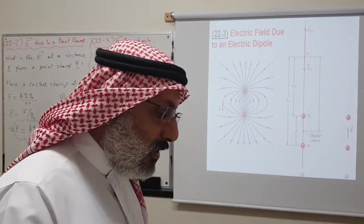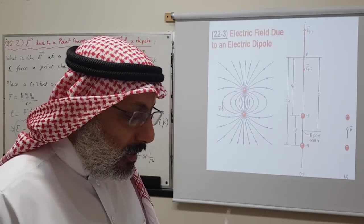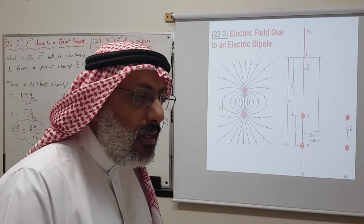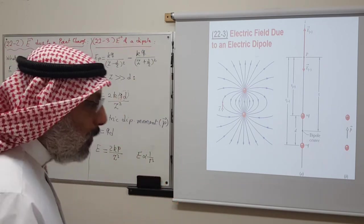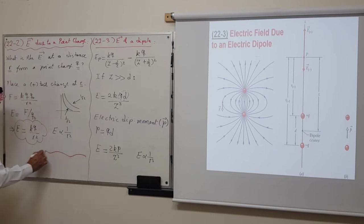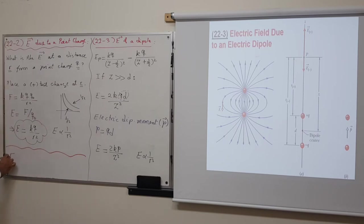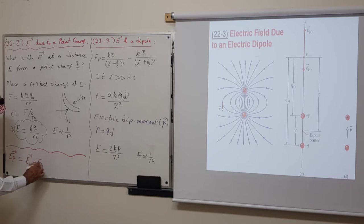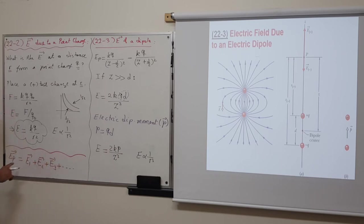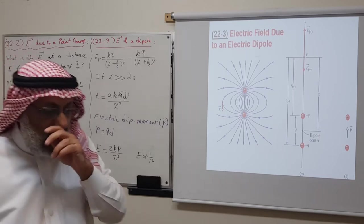Let us conclude with the superposition principle. If you have more than one point charge, the electric field at any point in space equals the vector sum of the individual electric fields produced by all the charges: E_net = E₁ + E₂ + E₃ + …, added vectorially to give the net electric field at that point.